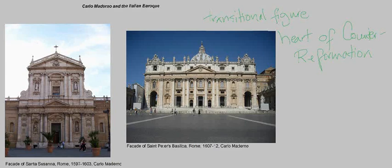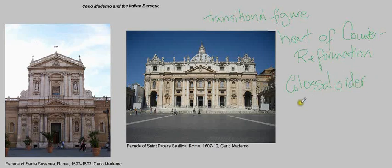Carlo Maderno can be credited with the facade. Let's try and see what we think is Baroque about it and what's interesting about it — we looked at this in our lecture introducing Baroque architecture. We mentioned the use of the Colossal Order, which is grand scale. Unlike at Santa Susana and the architecture more typical of the Renaissance, we have massive scale architectural elements.